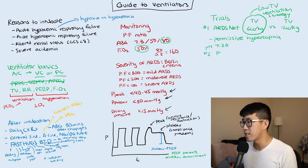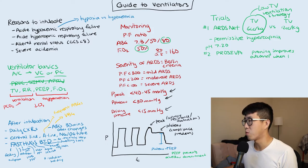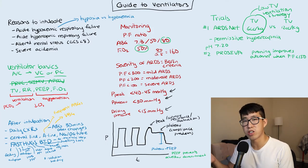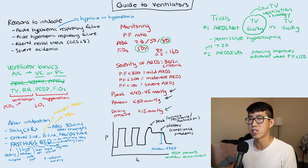The second trial to know is the PROSEVA trial, which showed that proning improved outcomes when the P to F ratio is less than 150. When a patient is supine, dependent lung tissue is collapsed by gravity and surrounding organs. When proned, that lung tissue is on top, improving gas exchange surface area. Only the small anterior portion of lung collapses, so proning is effective for improving oxygenation.